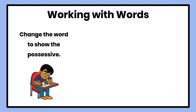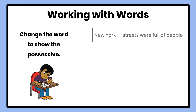Let's keep looking at how we can change a word to show the possessive. If I say New York's streets were full of people, and I want to show that the streets belong to New York, what might I add to make it a possessive? We would add the apostrophe S so that the sentence now reads: New York's streets were full of people. Adding the apostrophe S made New York the possessive of streets.